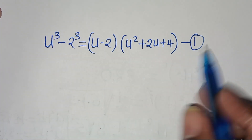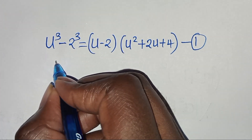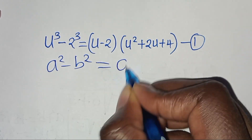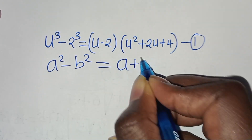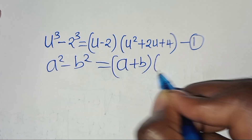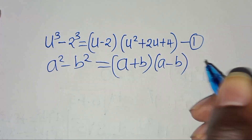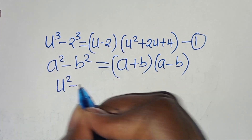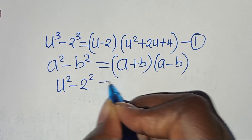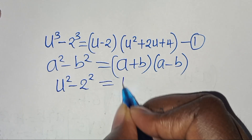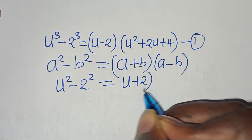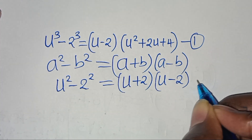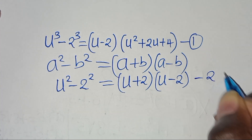We have that the second part is in the form of a squared minus b squared, which we can express as a plus b times a minus b. So we have that u to the power of 2 minus 2 to the power of 2 is the same as u plus 2 times u minus 2. Let's call this equation 2.